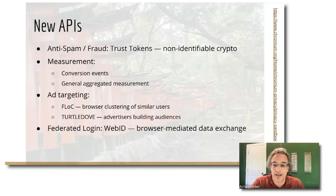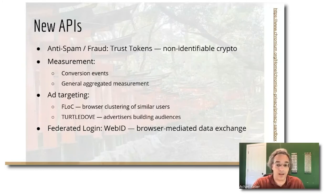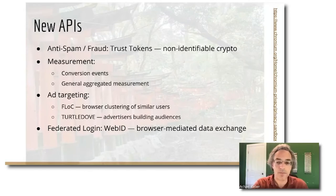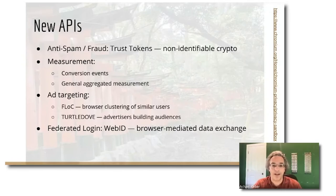Second, there's a bunch of measurement APIs. There's one specifically for ad conversion events — where an advertiser wants to learn which ad clicks led to purchases, even though they can't tell which visitor on the publisher site matches which customer on the advertiser site. There's another API for more general aggregated measurement involving secure multi-party computation infrastructure, making it possible to learn statistics aggregated over a population while there's provably no way to learn anything about any specific user or event.